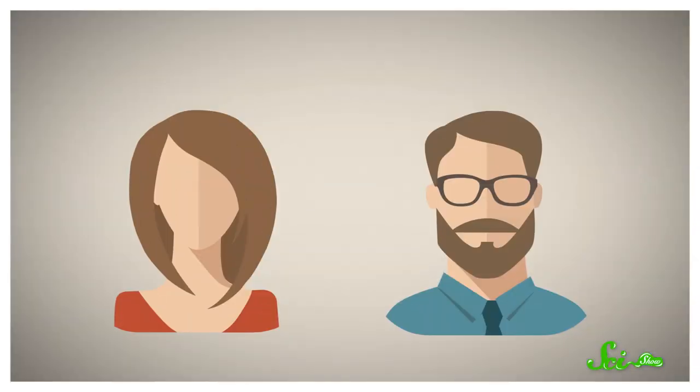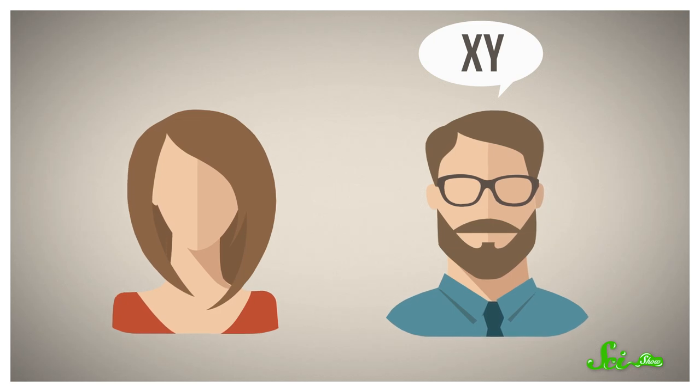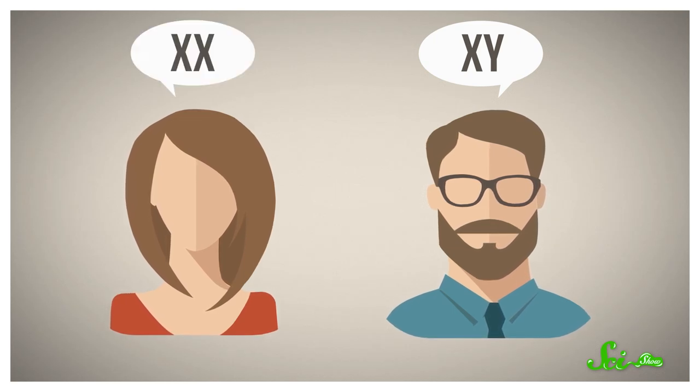We tend to think about biological sex as having one of two distinct genetic codes. If your sex chromosomes—that is, the 23rd pair on your cells—are X and Y, then you're male. If you have an X and an X, then you're female.